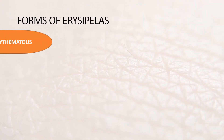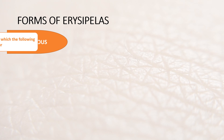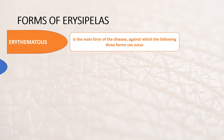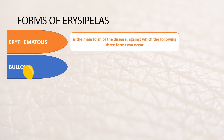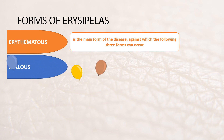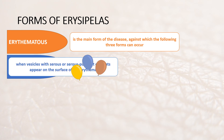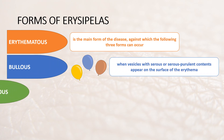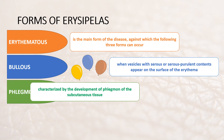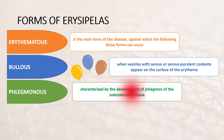Forms of erysipelas. The erythematous form is the main form of the disease, against which the following three forms can occur. Bullous: vesicles with serous or serous-purulent contents appear on the surface of erythema. Phlegmonous: characterized by development of phlegmon in the subcutaneous tissue.